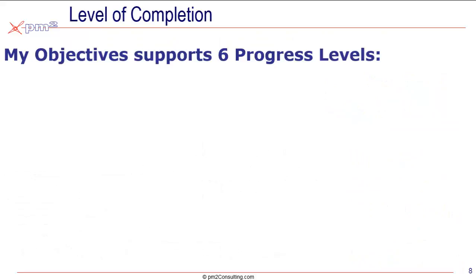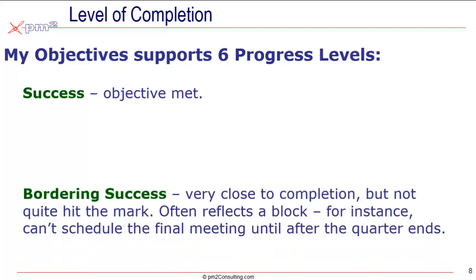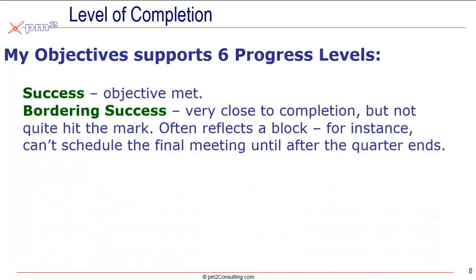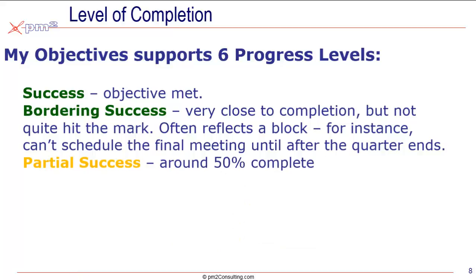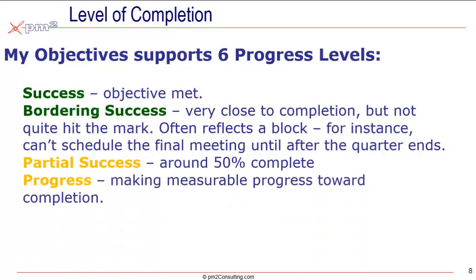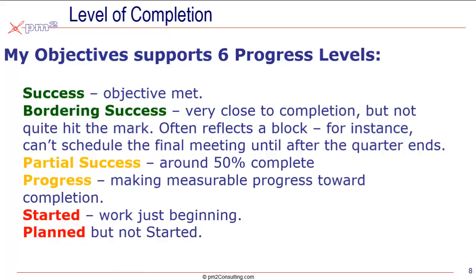Secondly, we talked about progress — the level of completion during the game. Within My Objectives, there are six progress levels: success, meaning you've met the objective within that game period; bordering success, where you're close to completion but haven't quite hit the mark; partial success, around 50% complete; if you've made progress, you're making measurable progress; you've started it; or you've planned but not started it yet. These are colored green, amber, and red to designate the net score you'd expect to achieve at the end of the game at that level. If at the end of the game you had only started that objective, obviously that would be a problem. If you achieved success, that's good — that's green.